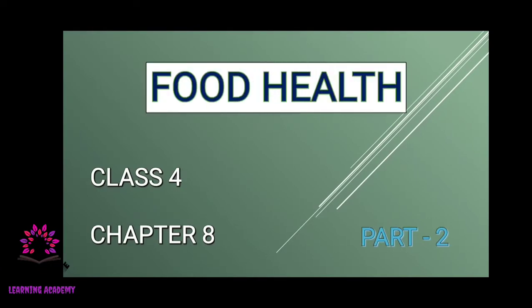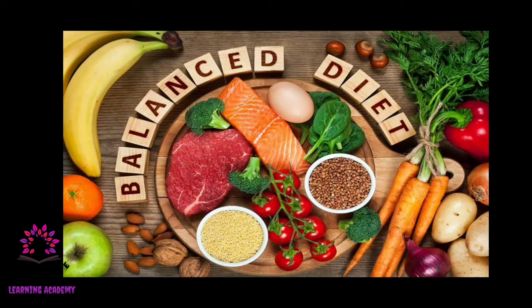Hello children. In our previous class we learned about food and health part 1. Today we will study chapter food health for class 4 EVS. We are talking about various nutrients of food — carbohydrates, vitamins, lipids, proteins, etc. We also spoke about vitamins A, B, C, D and the diseases caused due to their deficiency. Is it possible to eat all these vitamins and nutrients at one time? No, isn't it?